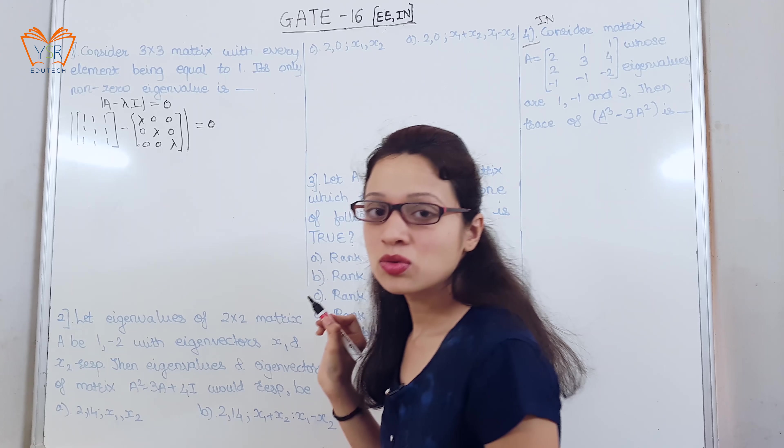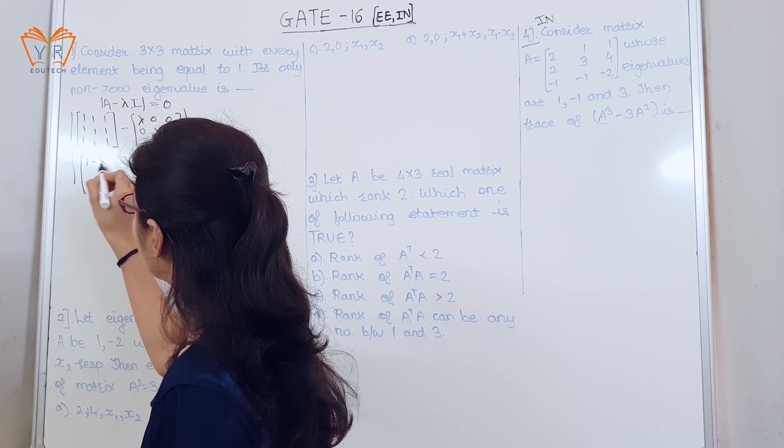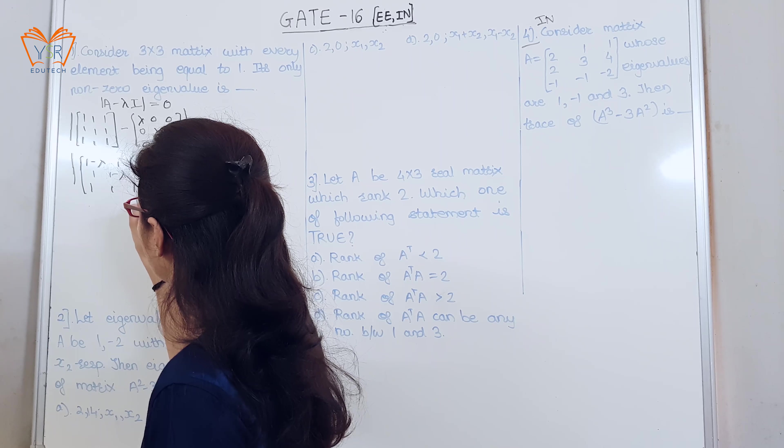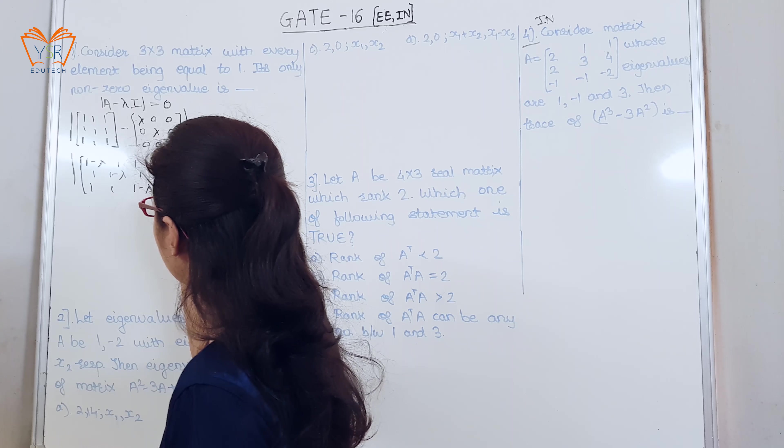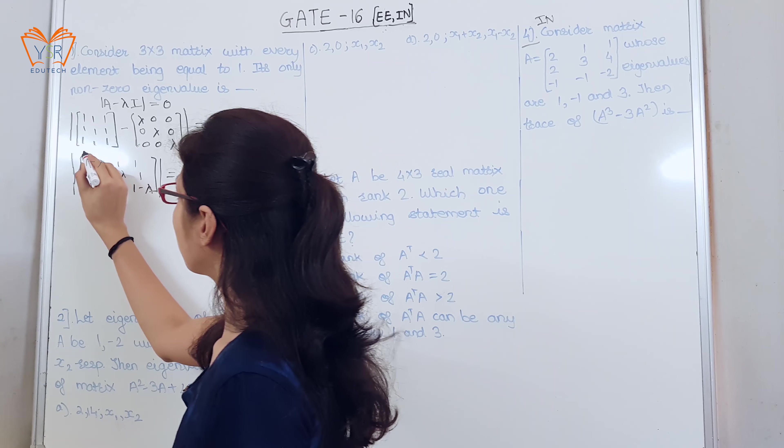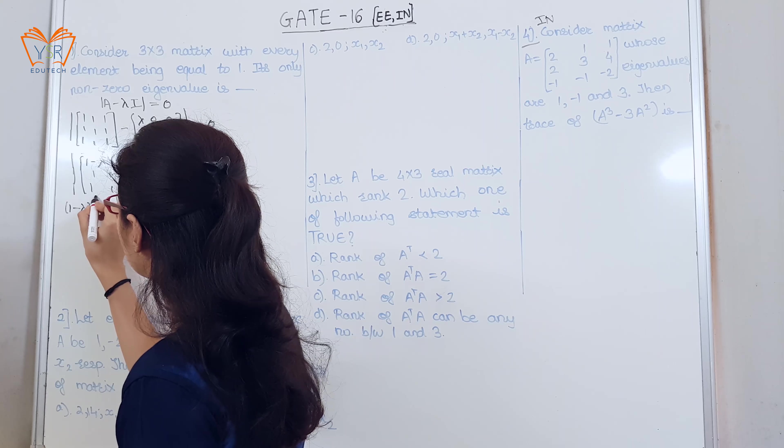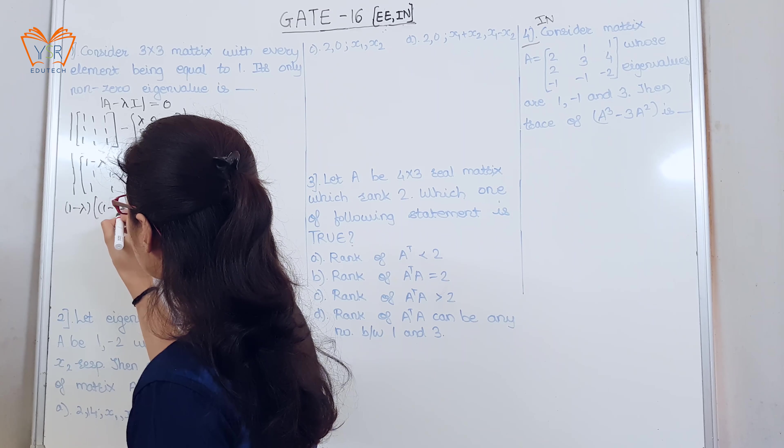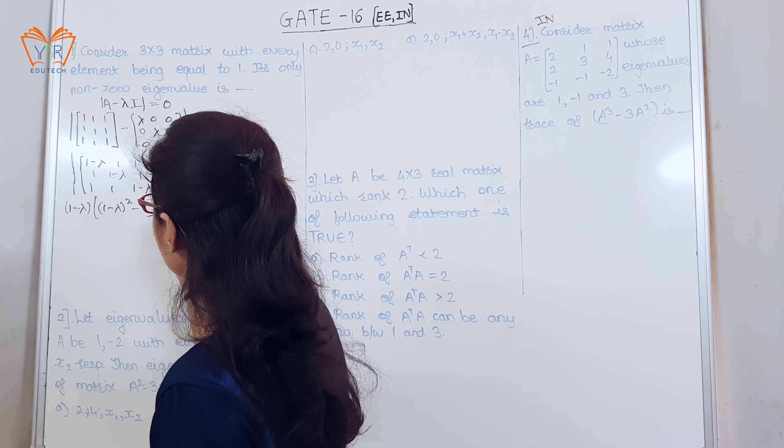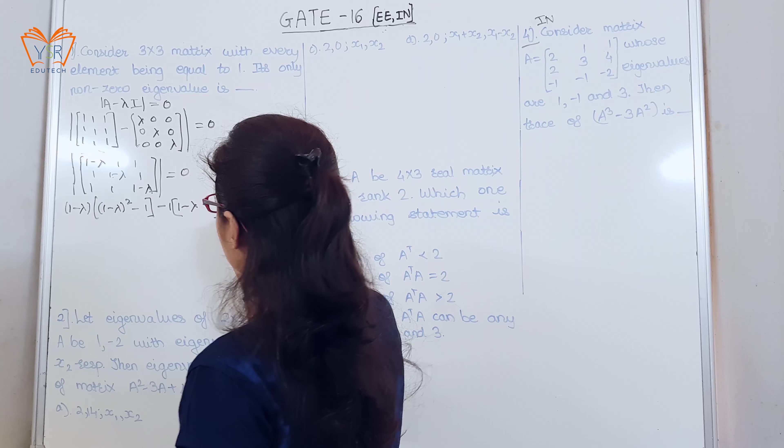Determinant of this is equal to 0. Now by subtracting, let us find the determinant value of this 3 by 3 matrix. We will expand it using the first row. So 1 minus lambda, 1 minus lambda into 1 minus lambda, 1 minus lambda whole square minus 1 minus 1.